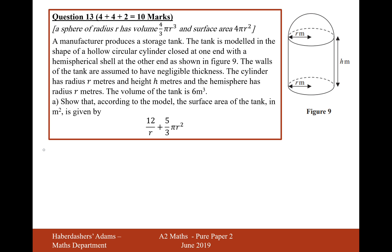The first thing we're going to need to do is work out an expression for h in terms of r. We know that the volume of this tank is 6 metres cubed and we know that the sphere has a radius 4 pi, 4 over 3 pi r cubed, the surface area of this.